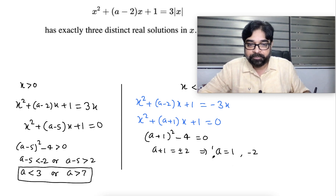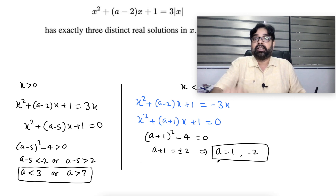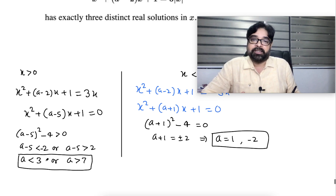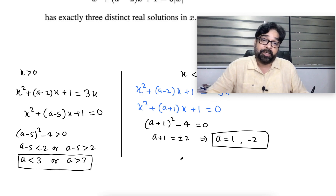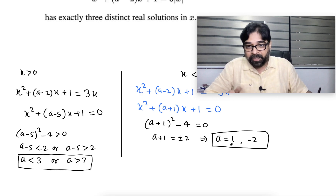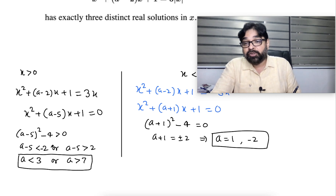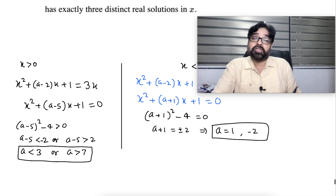Both values must satisfy both conditions. Checking: a less than 3 or a greater than 7 — both a equals 1 and a equals minus 2 satisfy a less than 3. So both are candidates. But we also need to make sure that the roots of the first quadratic are positive (since we assumed x > 0). We must verify the roots are positive for each candidate value.